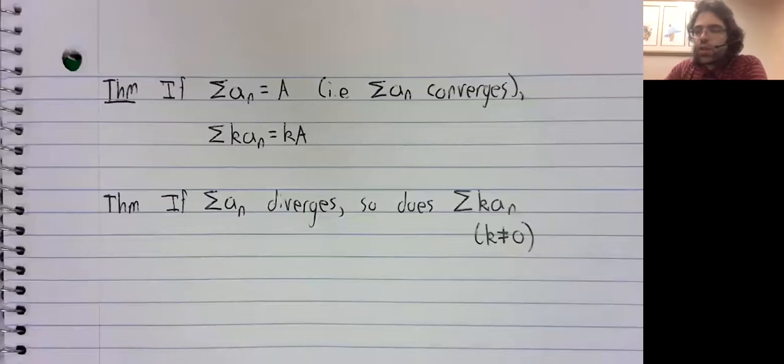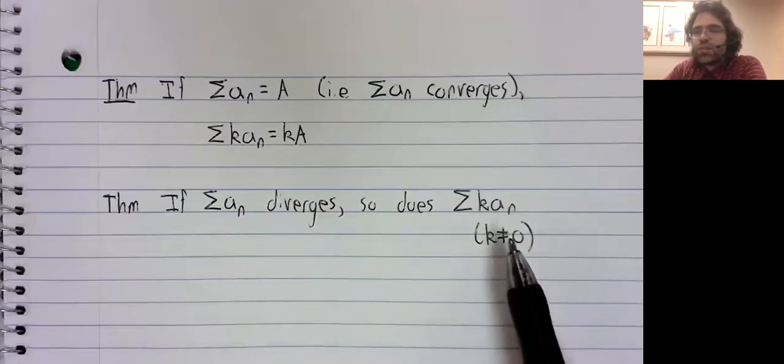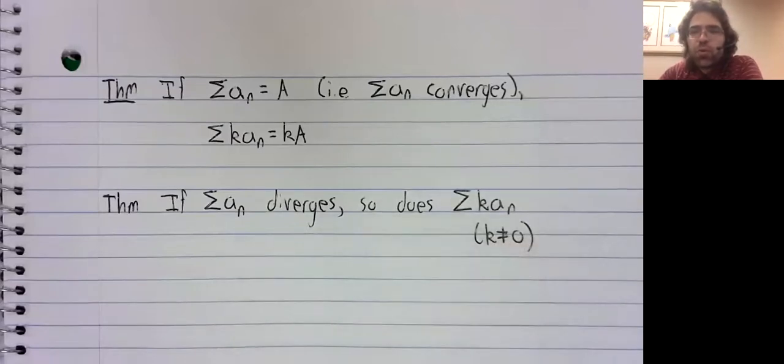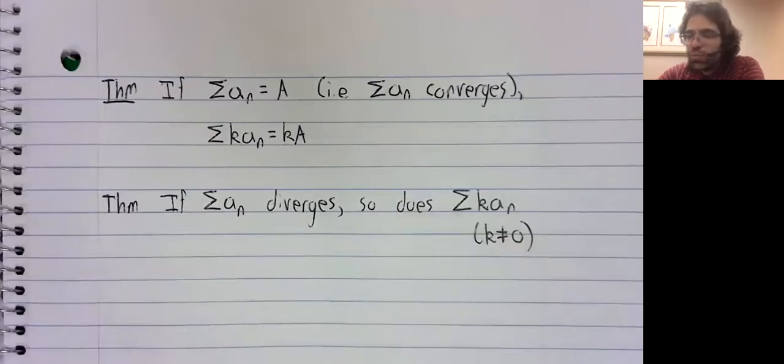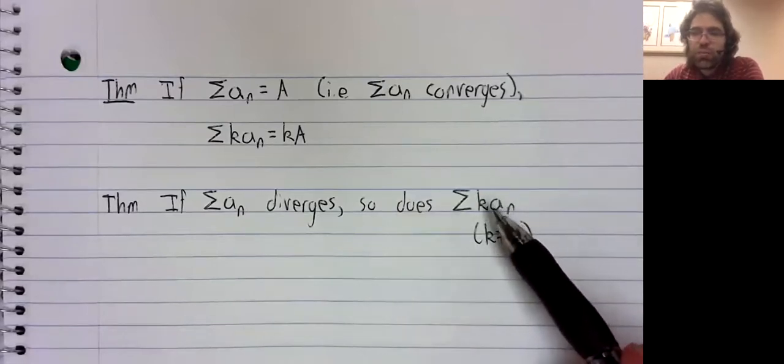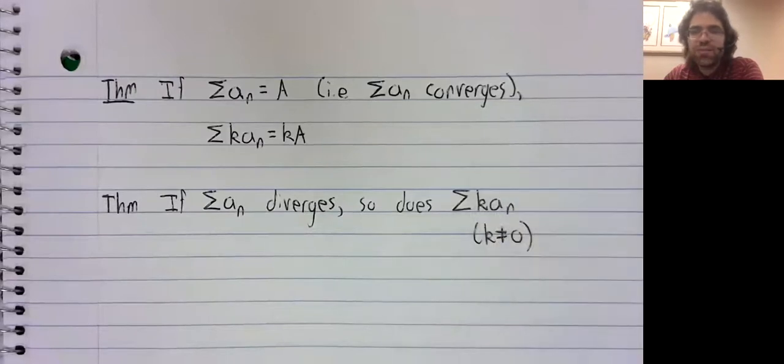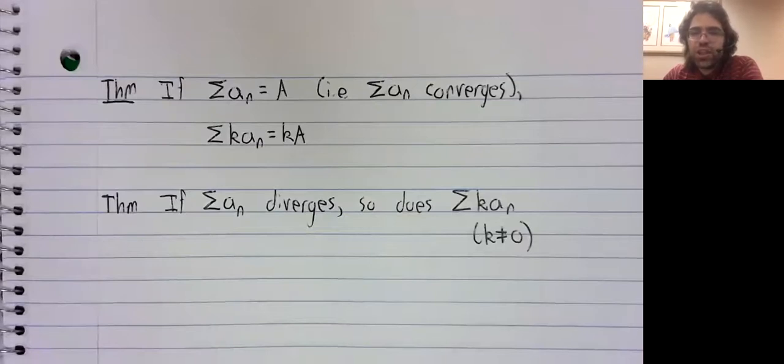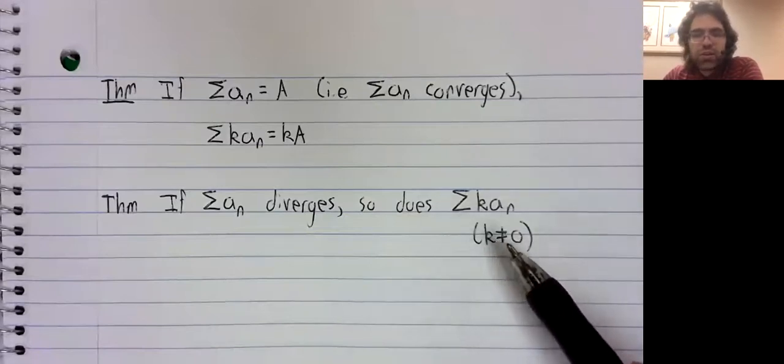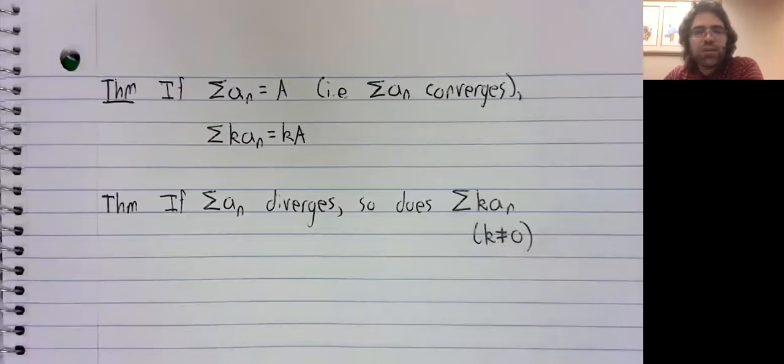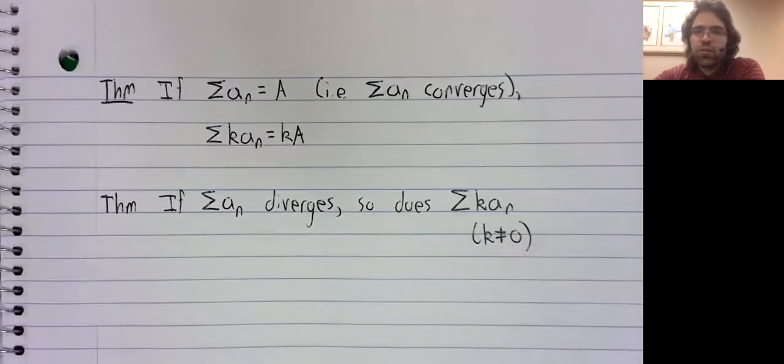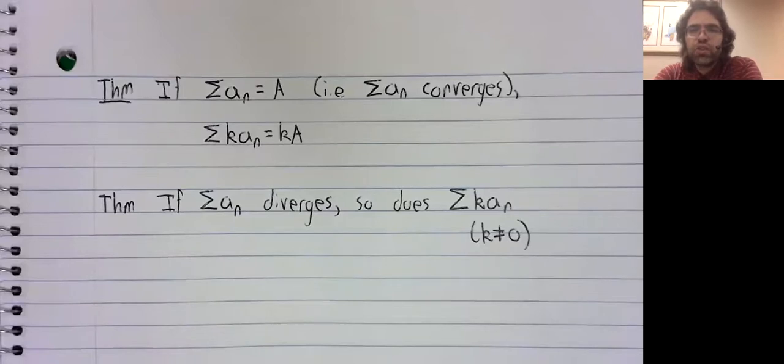This theorem has only the trivial example exception that if you multiply a divergent series by zero, if you take all the terms and multiply them by zero, well, that new series is just zero. But any other K, we cannot make a divergent series convergent in this way.